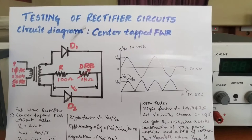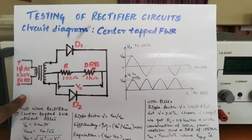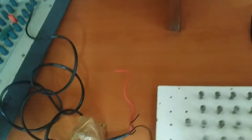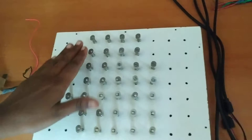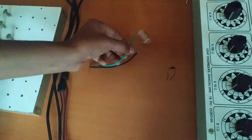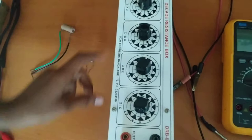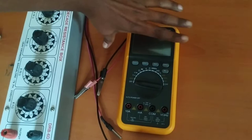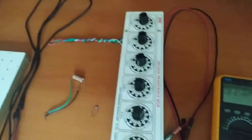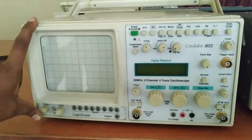The apparatus required for this experiment includes: a transformer — specifically a center tap transformer with three terminals — springboards for connection purposes, CRO probes, a 100 ohm power resistor, diodes rated IN4007 (two numbers required), a Decade Resistance Box (DRB), connecting wires for the multimeter, a multimeter for measuring voltage, and a CRO for observing output waveforms.